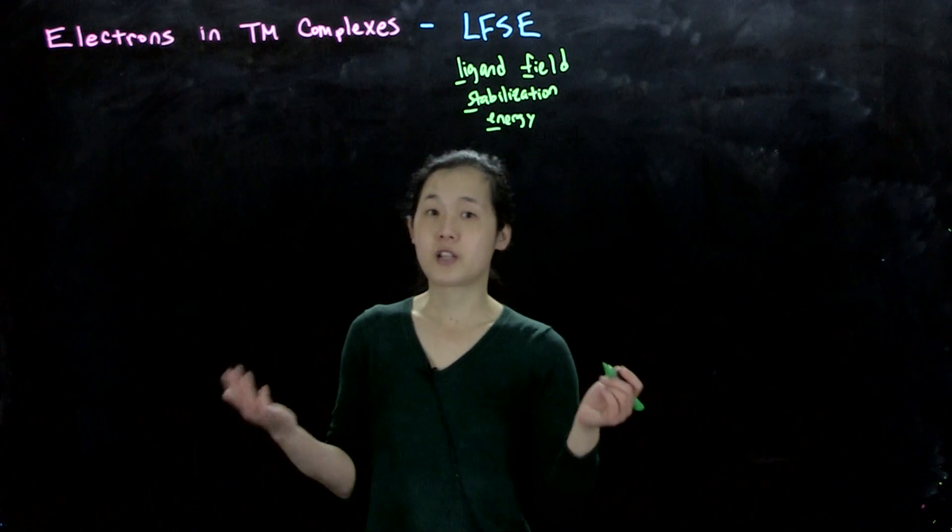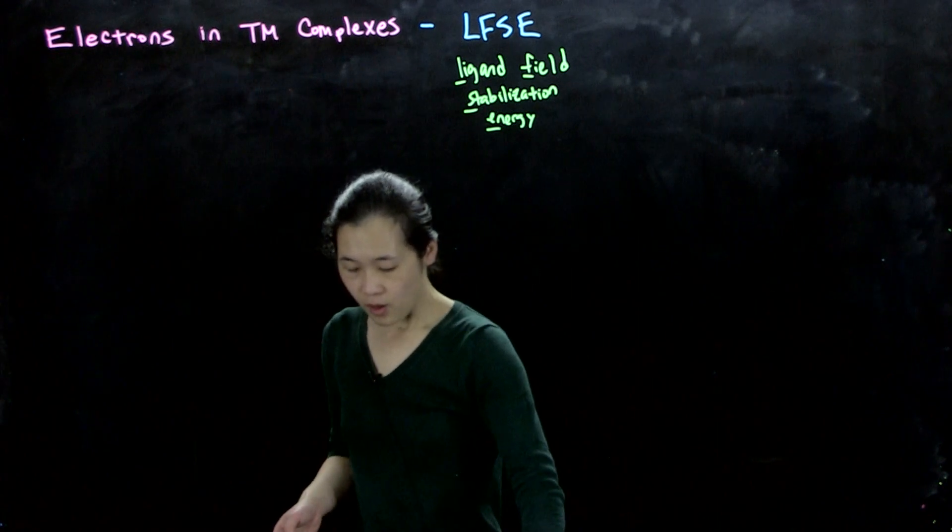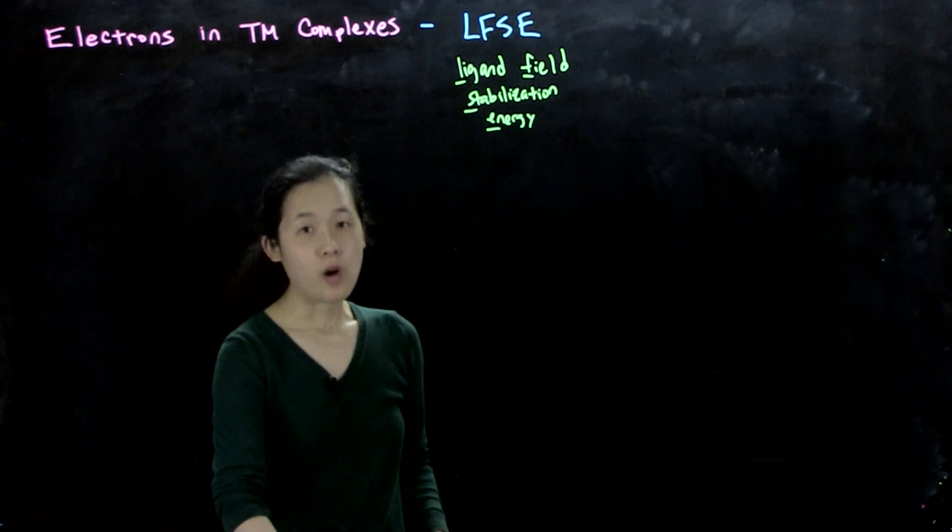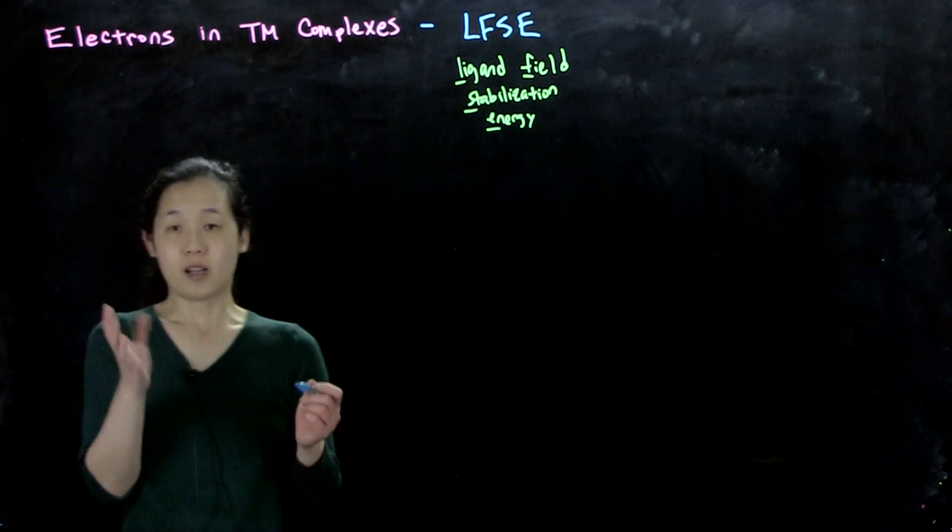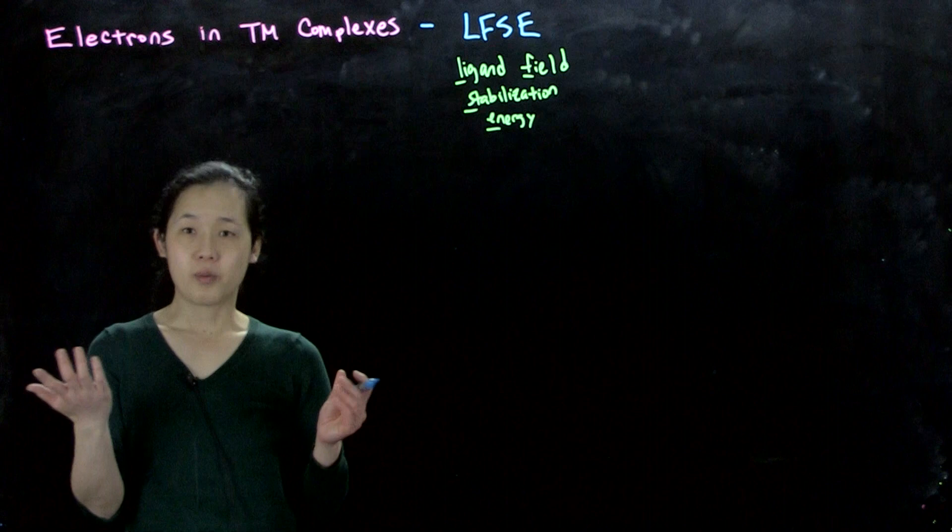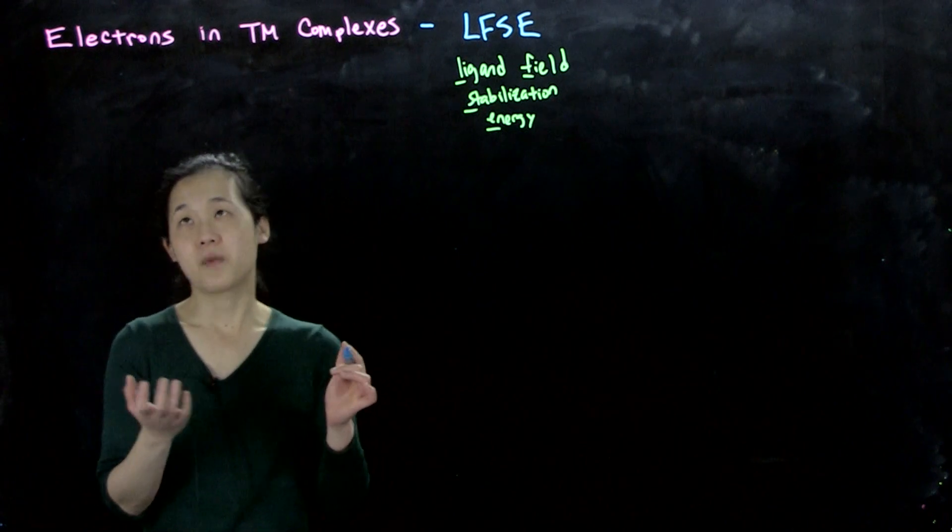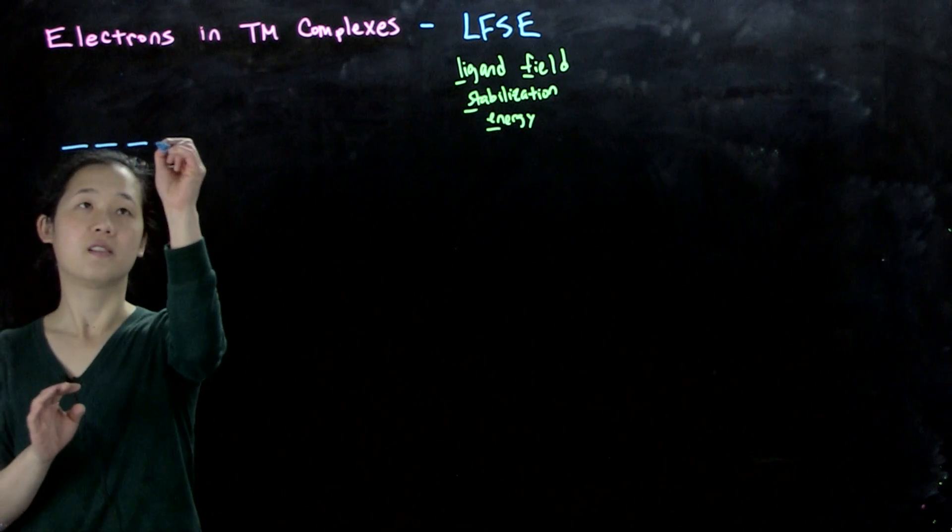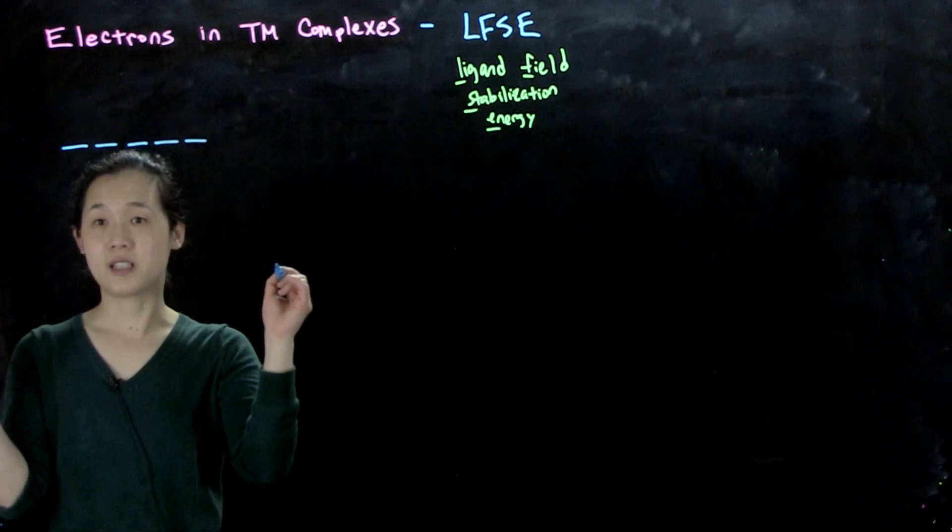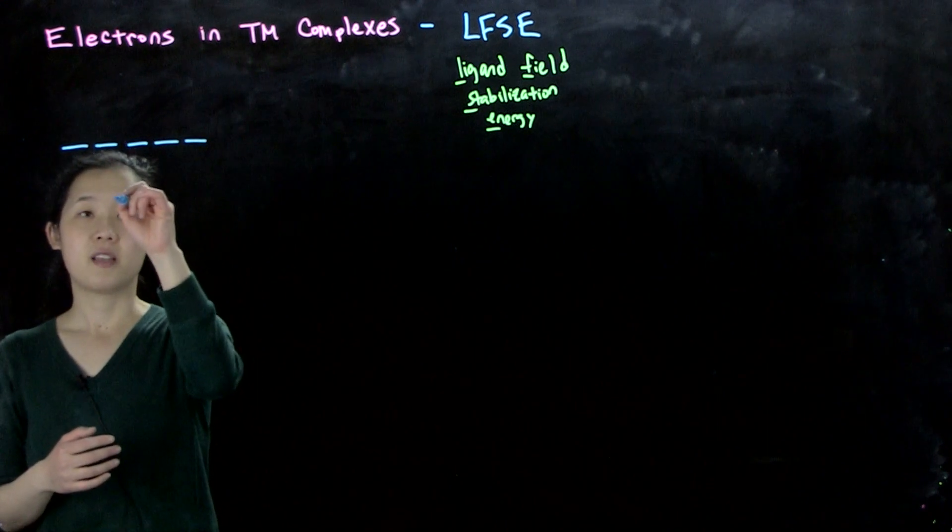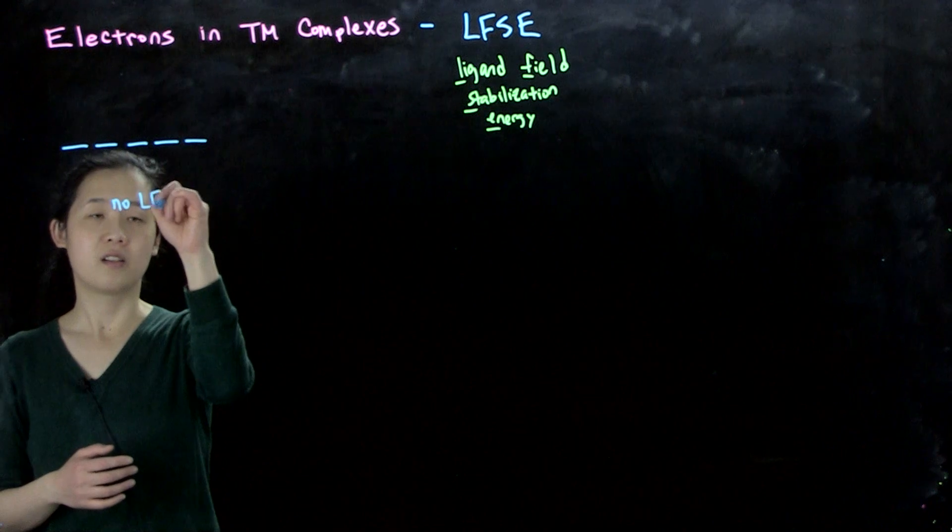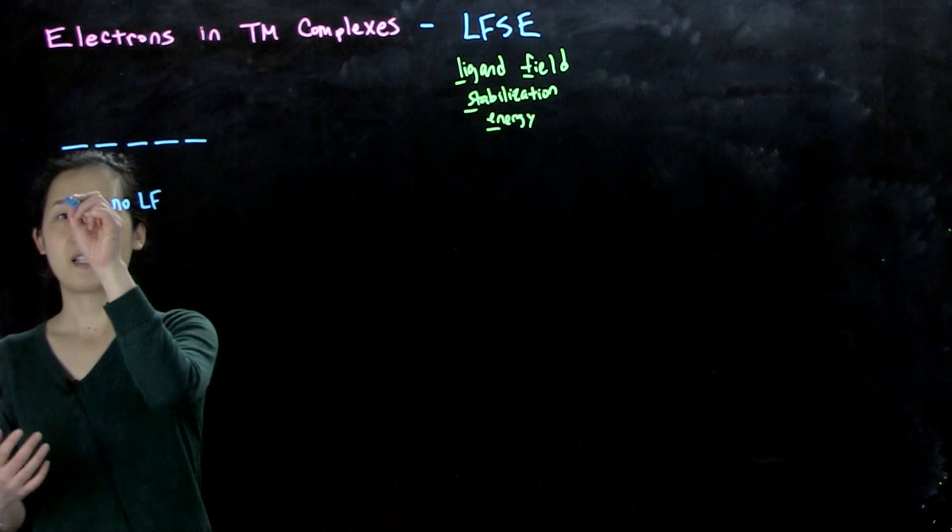These two parameters are interchangeable. What we want to think about is the stability that an ion imparts upon being bound by ligands. So if you think about a free transition metal ion with no ligands, no ligand field, and then we still have our d count, d^N.